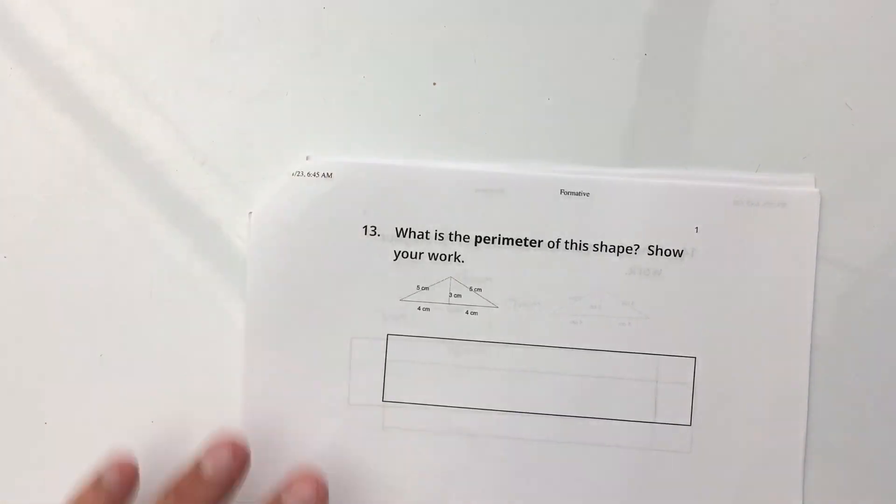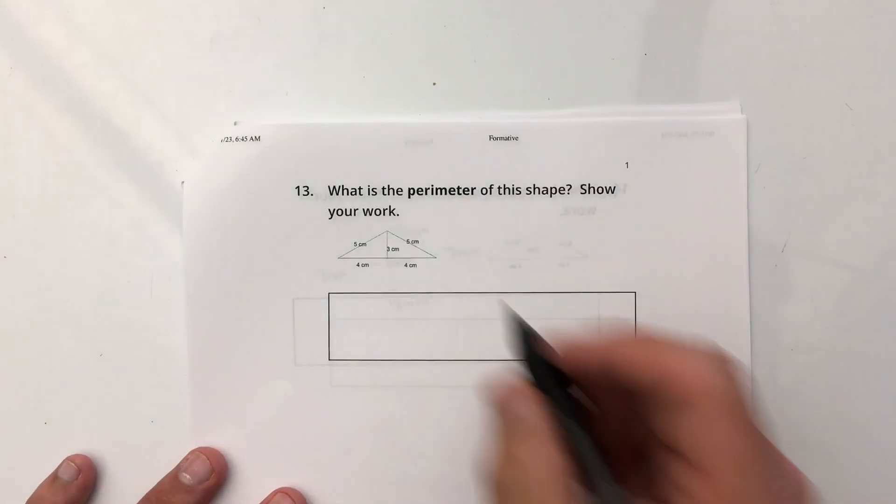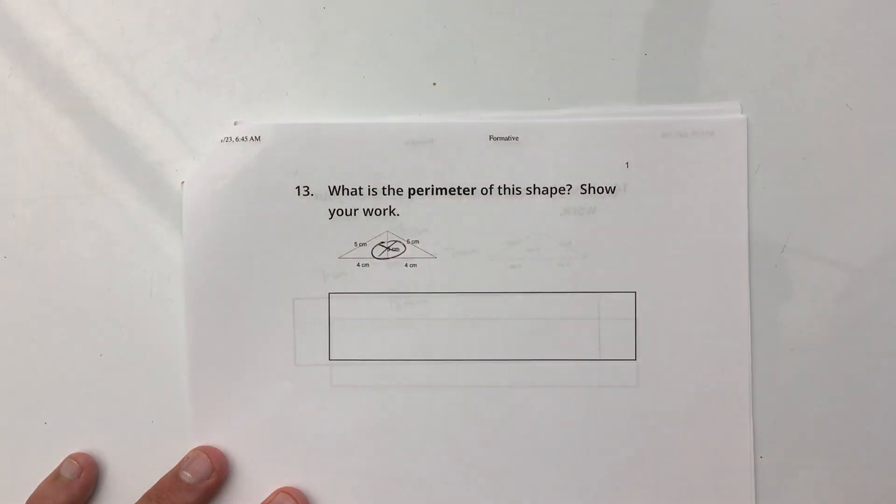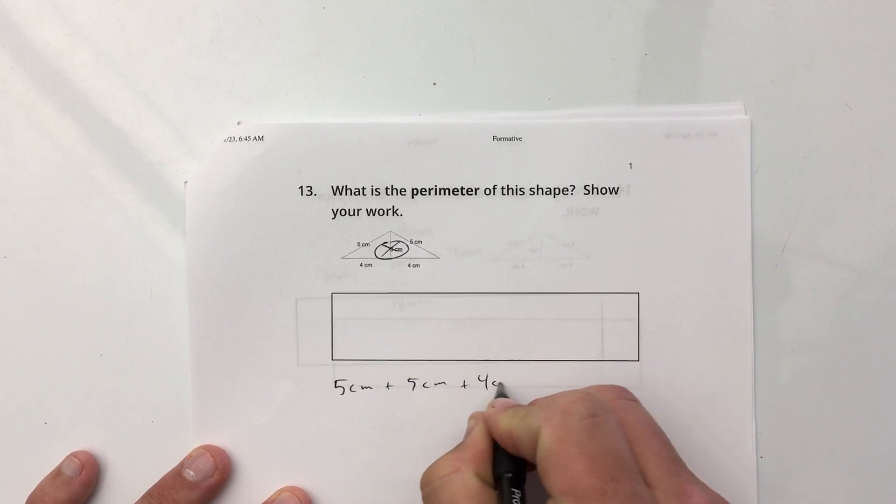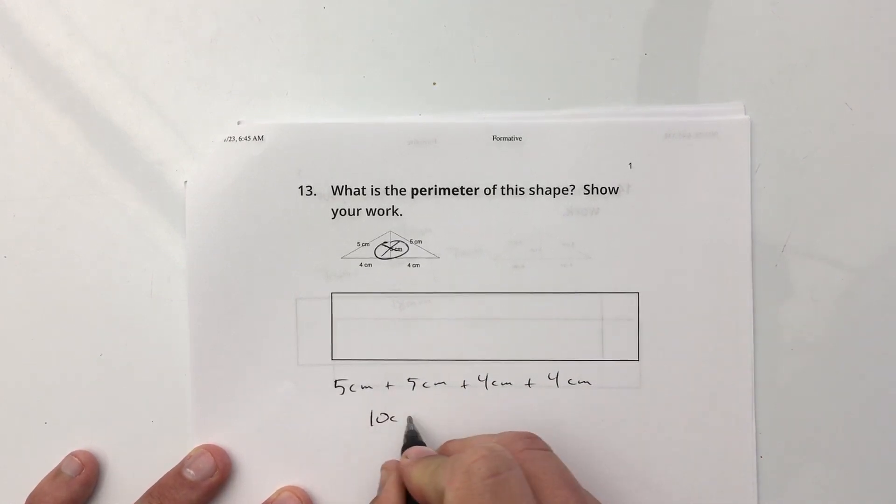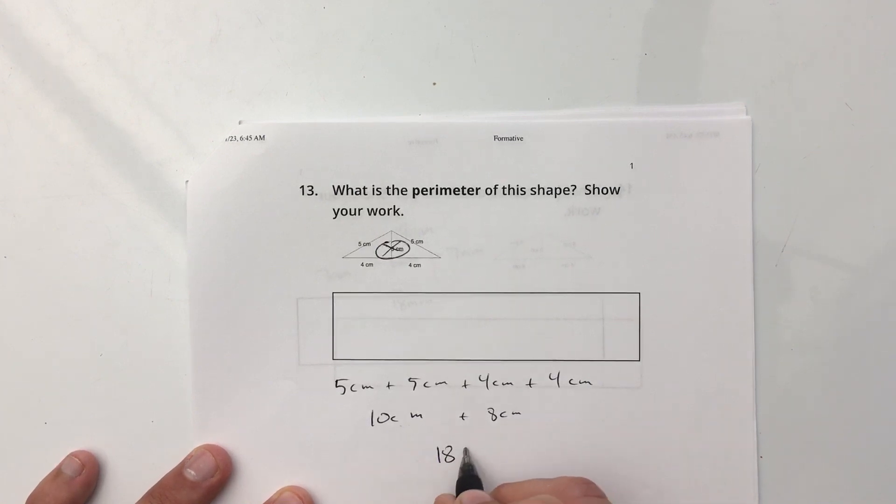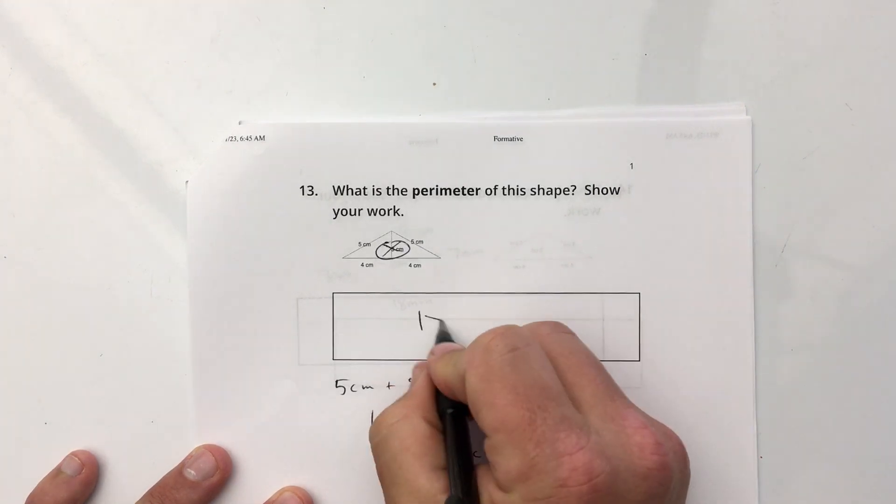Perimeter of this shape. The challenge here is ignoring the 3 centimeters because that's not on the outside, so that's not the perimeter. So we're going to do 5 centimeters plus 5 centimeters plus 4 centimeters plus 4 centimeters, which is 10 centimeters plus 8 centimeters. Notice we're just adding, so I don't have to adjust the variable. 10 plus 8 is 18 centimeters.